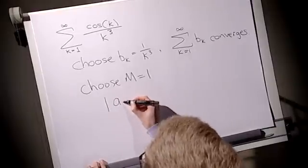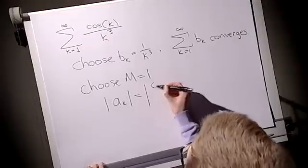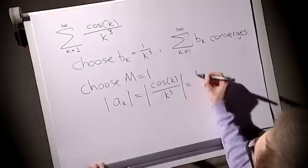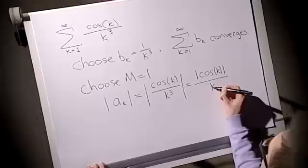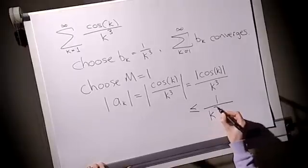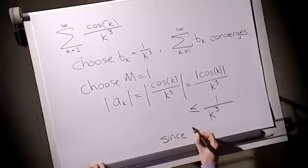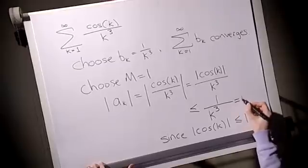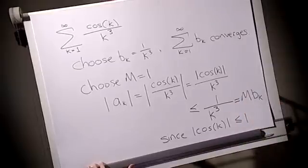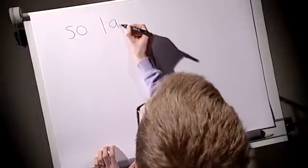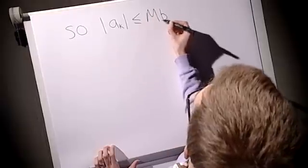And now we're going to look at the modulus of the ak terms. What's that equal to? The modulus of cos k over k cubed, which is the modulus of cos k over k cubed, which is less than or equal to 1 over k cubed. Since modulus of cos k is always less than or equal to 1. And this is nothing less than mbk. So each ak term in modulus is less than or equal to the mbk's as we required.